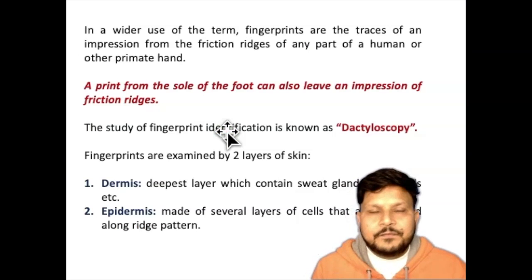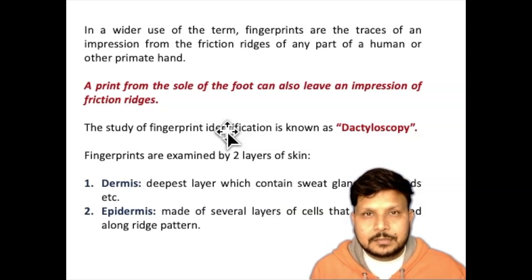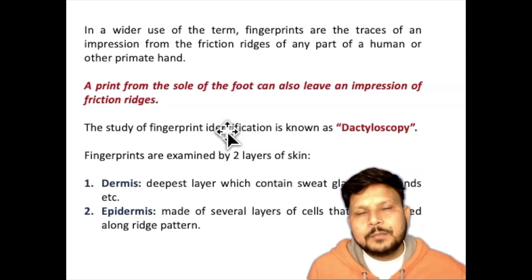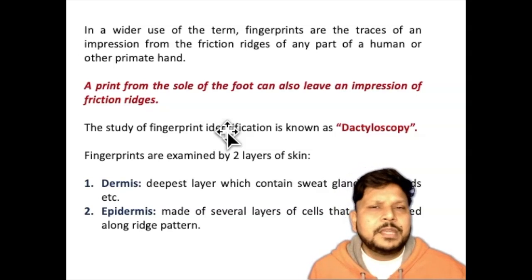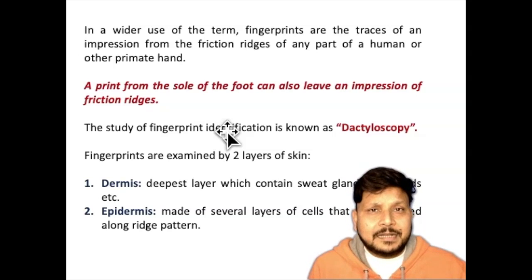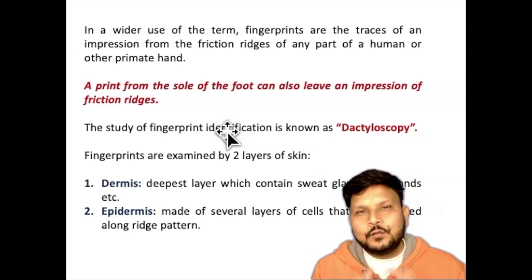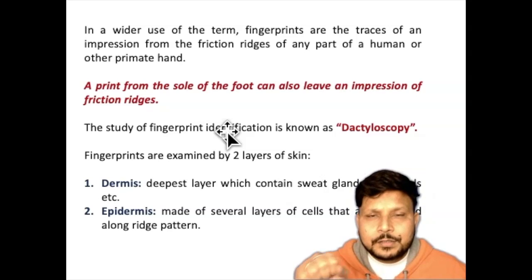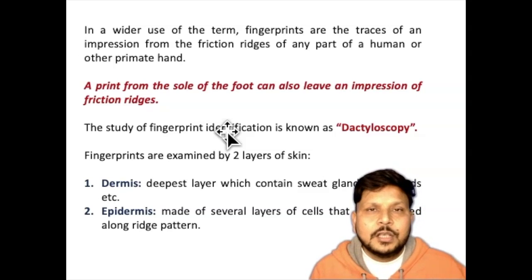Fingerprints are used as trace evidence. Whenever a crime is committed, a culprit or perpetrator on the crime scene touches several objects. You might think — what about when he's wearing gloves? Traces of the fingerprint will be inside the gloves, but it's very difficult to identify a culprit from glove prints. In many cases, as a culprit approaches the crime scene, they touch door handles without gloves, imparting their friction ridge impression onto those surfaces.